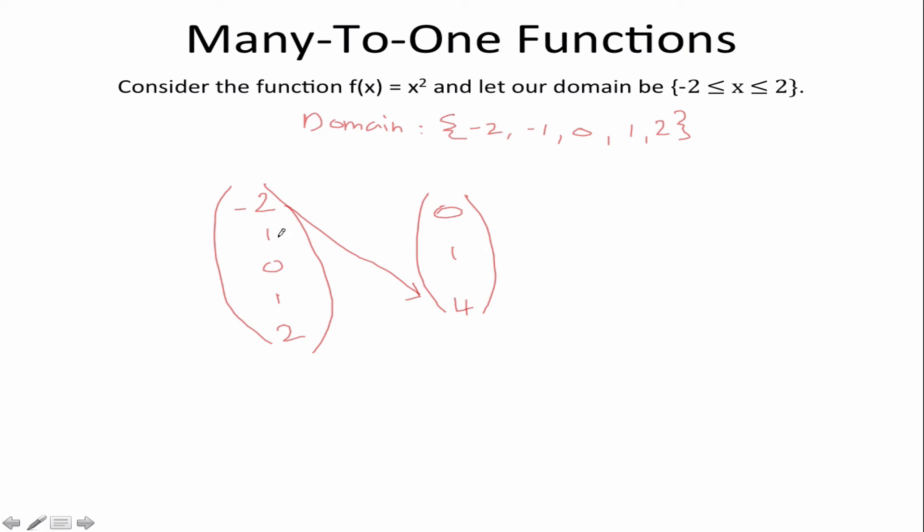Now have a look at this mapping diagram. Minus 2 squared gives me 4 so my arrow will go to 4. 1 squared is 1, 0 squared is 0, 1 squared is still 1 and 2 squared is 4. So as you can see I have multiple arrows going to the same image. For example 1 has both minus 1 and 1 going to it and 4 has also minus 2 and 2 going to it.